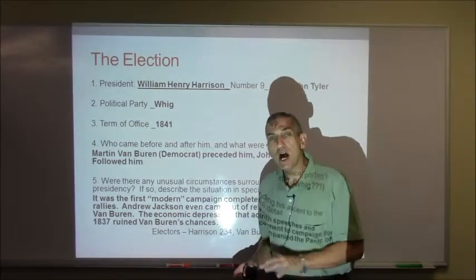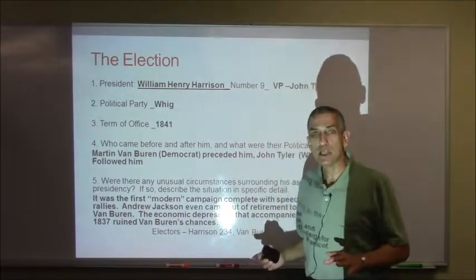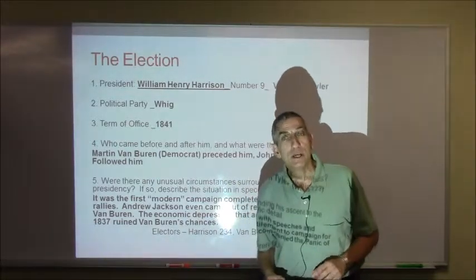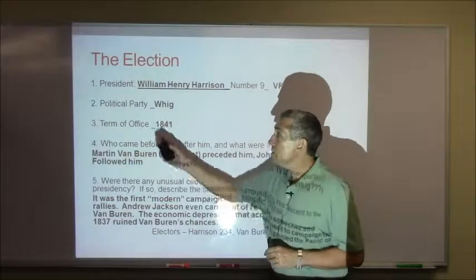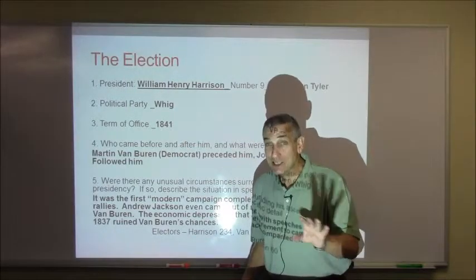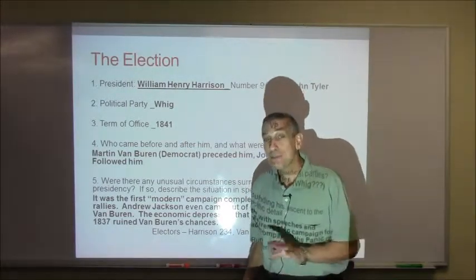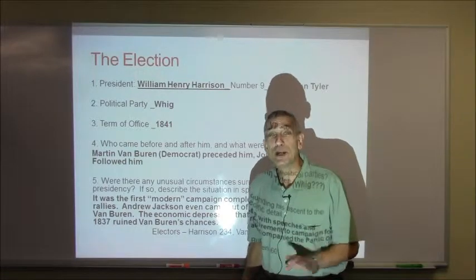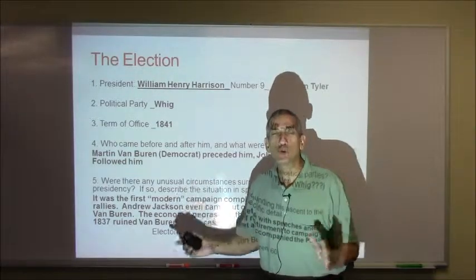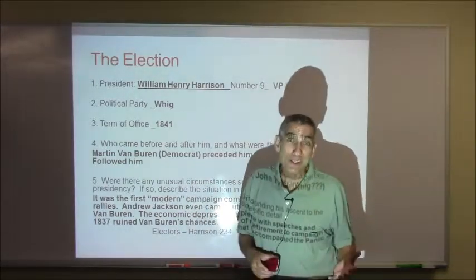People had had enough of the Democrats, and they wanted a change, and their change was to elect a Whig president. If you take a look, his term of office is 1841, and that's just it — 1841. He was president for an amazingly short amount of time because he caught pneumonia and died.